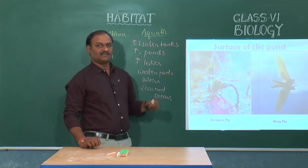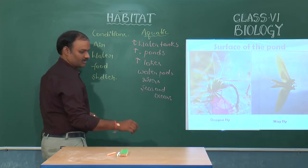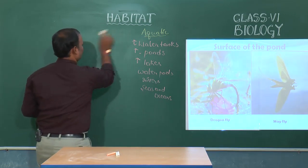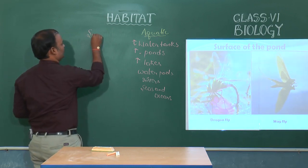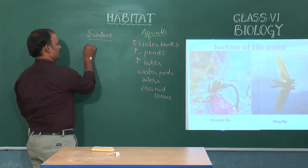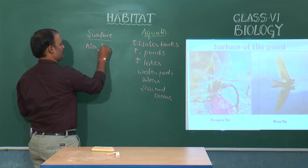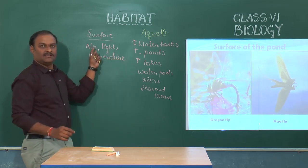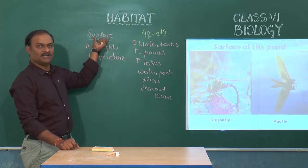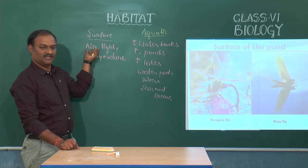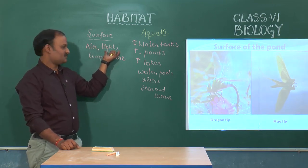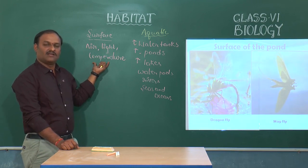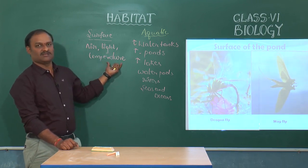At the surface of the pond, three major conditions are available: air, light, and temperature. Air is plentiful, light is sufficient for plants to photosynthesize, and the temperature is adequate for all organisms to survive.